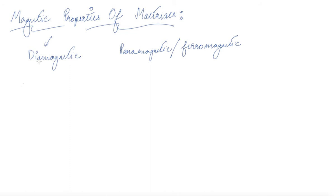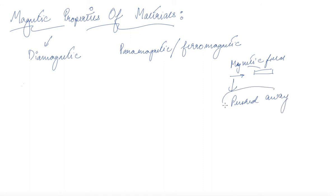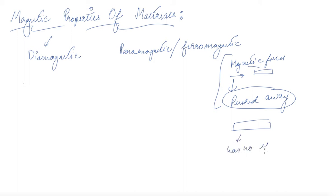In this video we will be talking about the types of magnetic properties in materials. Some materials are attracted towards a magnetic field, some are pushed away, and sometimes a material has no effect in the presence of a magnetic field. With these questions in mind, we will start to classify materials.